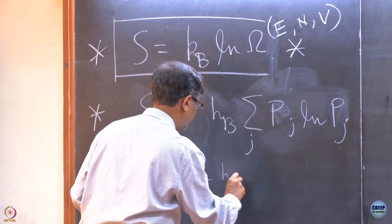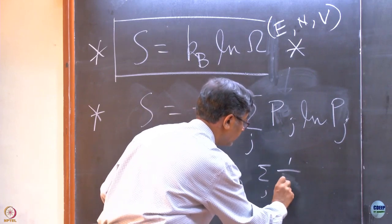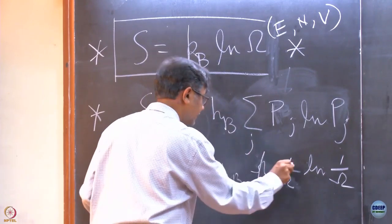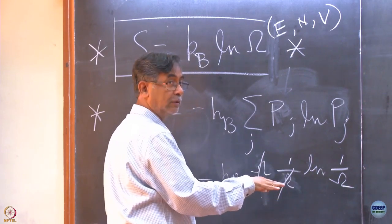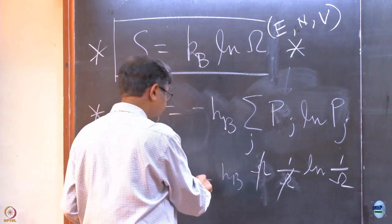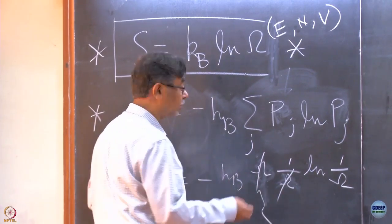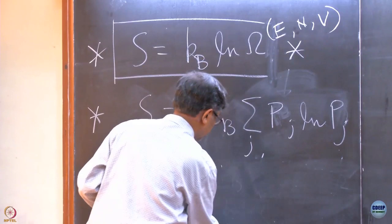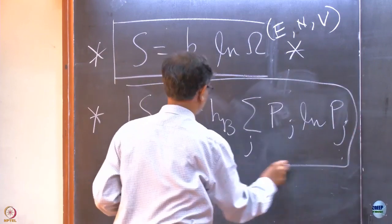This becomes minus Kb. The sum gives omega. This omega cancels that omega. ln(1/omega) gives ln(1) = 0. So I have minus omega times ln(omega). The minus cancels the other minus, so I get plus ln(omega).